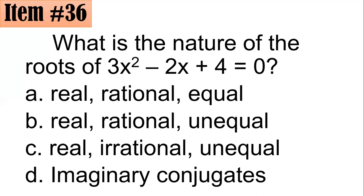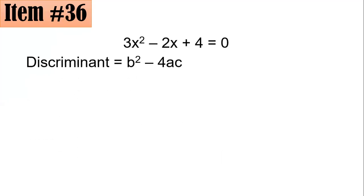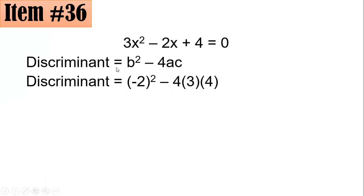To determine this, we use the discriminant, which is b squared minus 4ac — the expression under the radical sign in the quadratic formula. Here a equals 3, b equals negative 2, and c equals 4. Note that the equation must be in standard form to correctly identify a, b, and c.